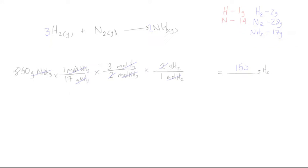So in this process resulting in 850 grams of ammonia, the amount of hydrogen required in this balanced chemical equation is 150 grams of H₂.